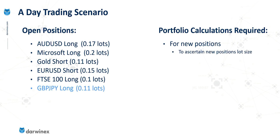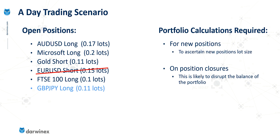There's a second time that this optimisation needs to take place, and that is every time a position closes. Using the example of this euro-dollar short position closing — whenever this happens, it's likely to disrupt the balance of the portfolio. Euro-dollar and Australian dollar-USD, which is also in the portfolio, tend to be fairly correlated because they share that USD component. By holding Australian dollar-USD long and euro-dollar short, this would have hedged one against the other and resulted in lowering the risk of the overall portfolio.